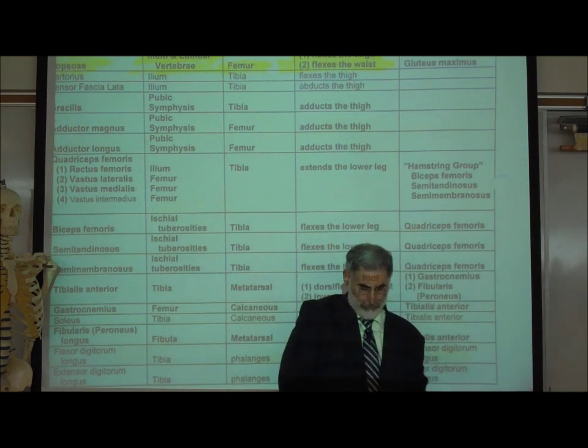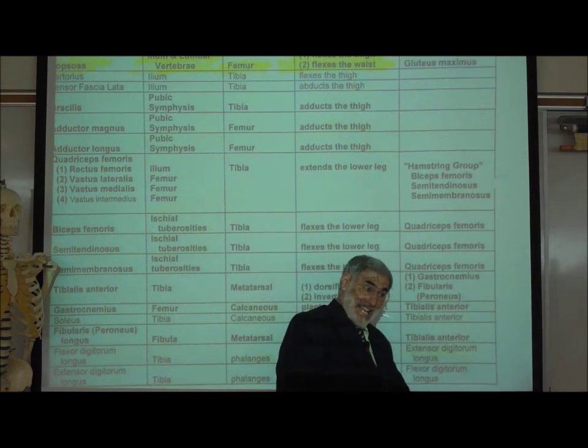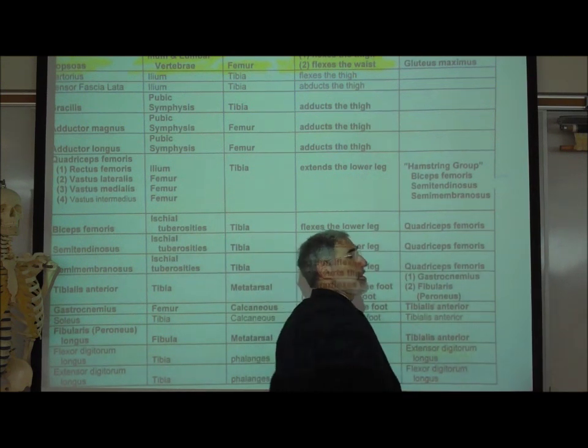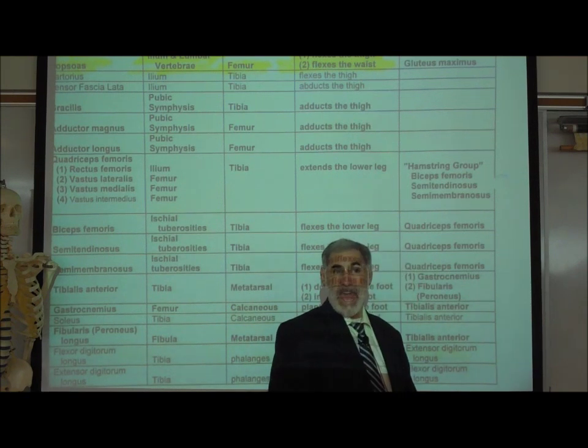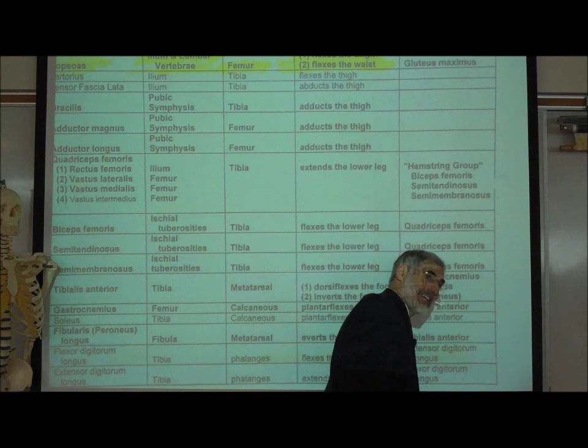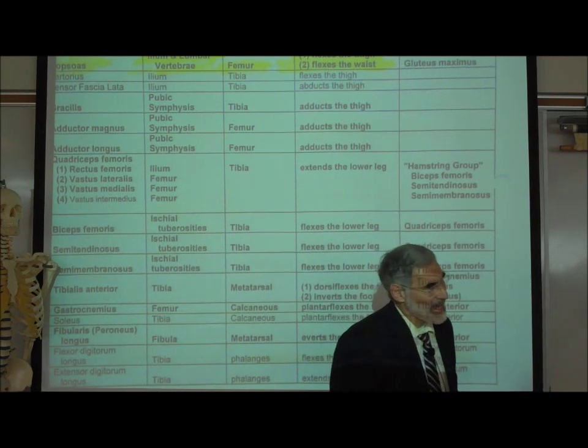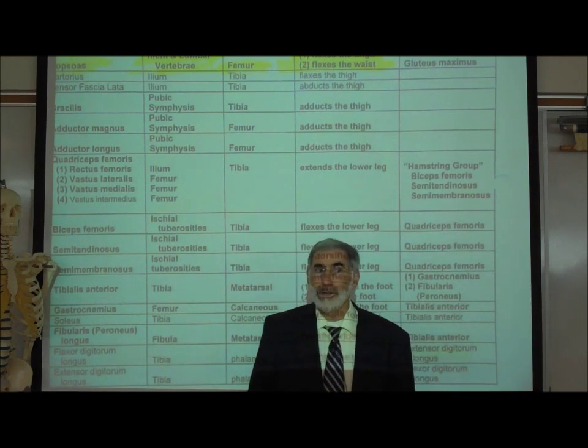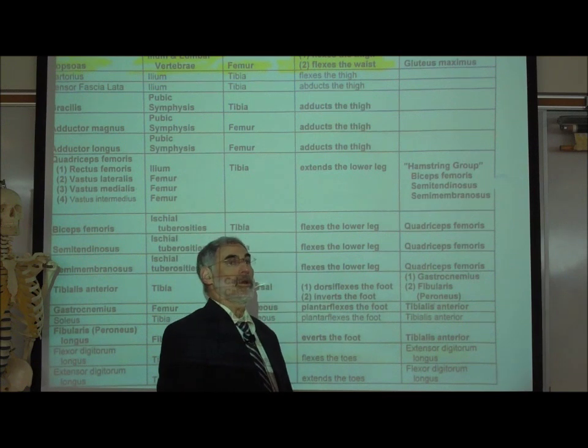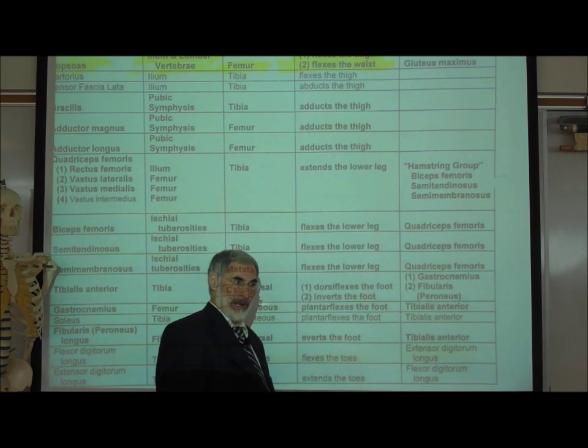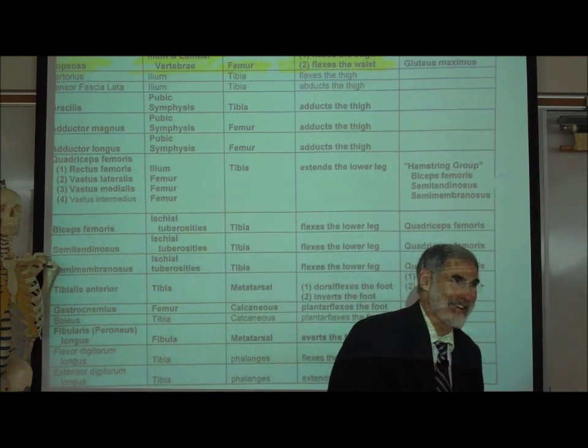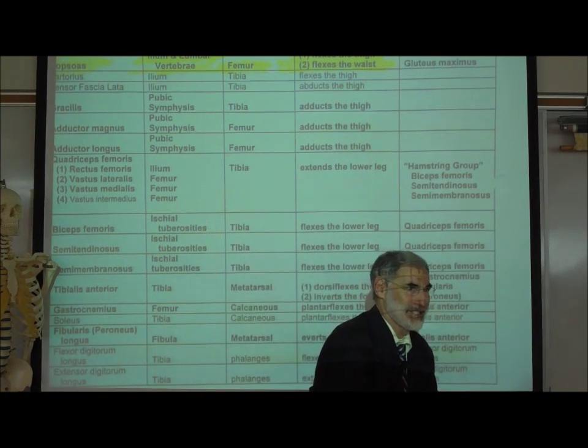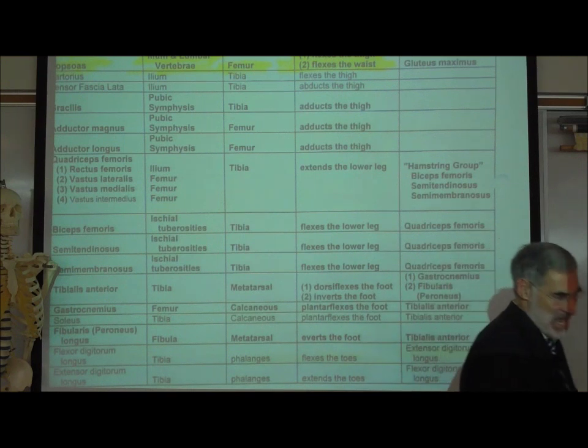Now, the quadriceps is on the front of your thigh and extends your lower leg. The muscles that are on the back of your thigh, commonly called the hamstrings, flex your lower leg. They're the antagonists. They're all equally important because the way we walk is we alternately extend our lower leg and flex our lower leg. We have to be able to extend it with our quadriceps and flex it with those hamstrings.